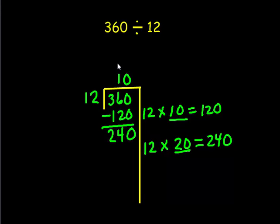So we need to take our 20, stack our partial on top of the 10, making sure we're using our place value alignment. And 12 times 20 is 240. We subtract 240, and that leaves us with 0. We do not have a remainder.